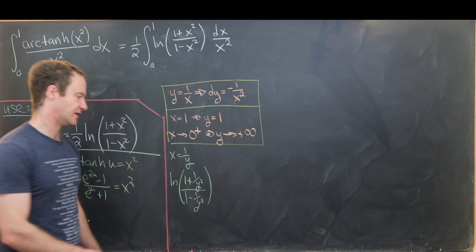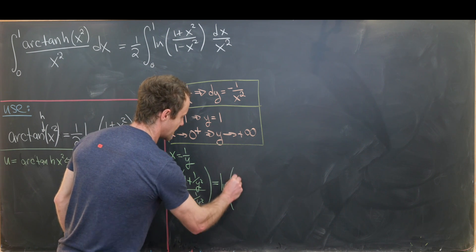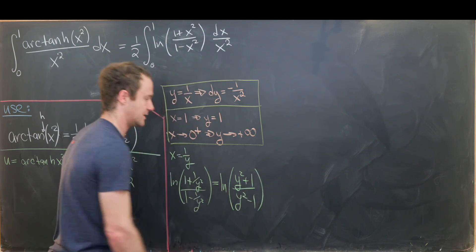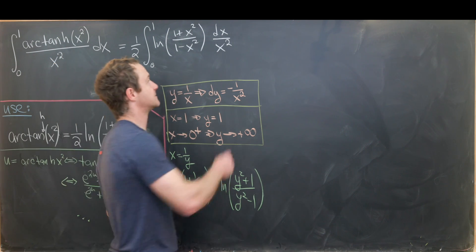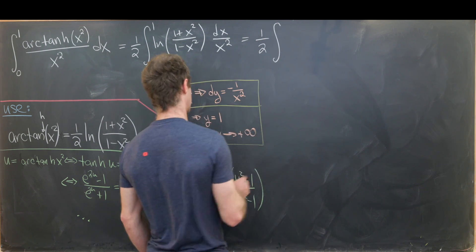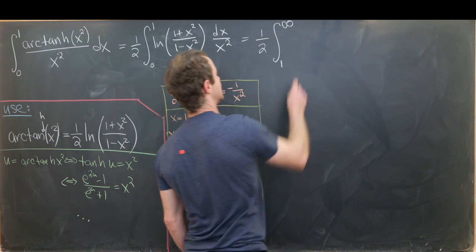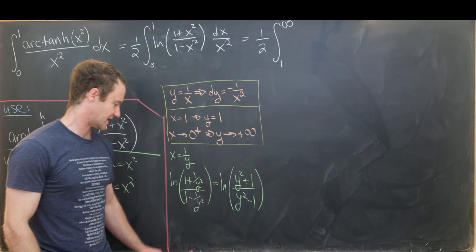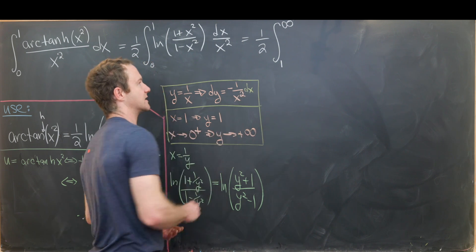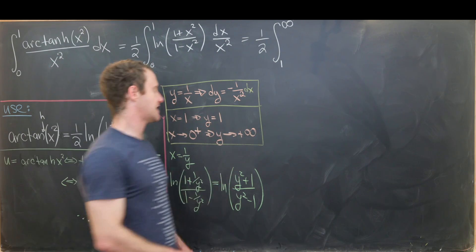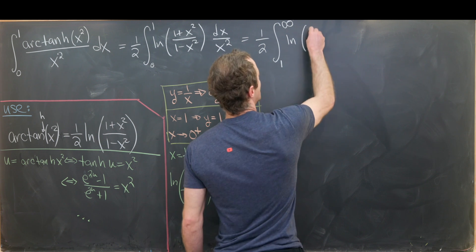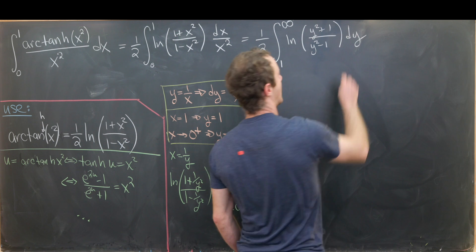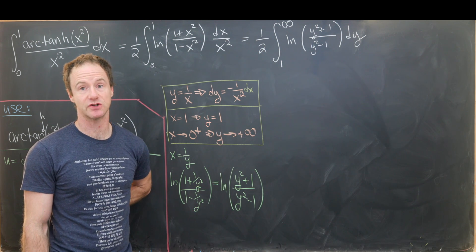Multiplying numerator and denominator inside the log by y² gives (y² + 1)/(y² − 1). So after the substitution and absorbing the minus sign by switching bounds, we have one half times the integral from 1 to infinity of the natural log of (y² + 1)/(y² − 1) dy. This is a little easier to work with.